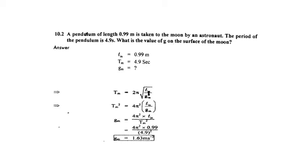Squaring on both sides, we get Tm squared is equal to 4pi squared LM over GM. We have to find the gravitational acceleration. We separate it by cross multiplying: GM is equal to 4pi squared LM divided by Tm squared. Putting the values, LM is 0.99 and Tm is 4.9, we get the value of gravitational acceleration on the surface of the Moon, which is 1.63 meters per second squared.